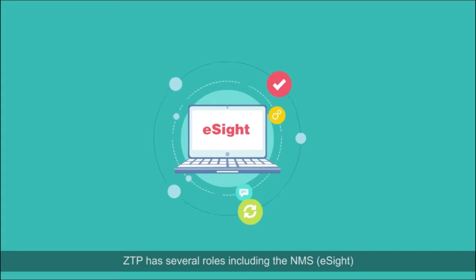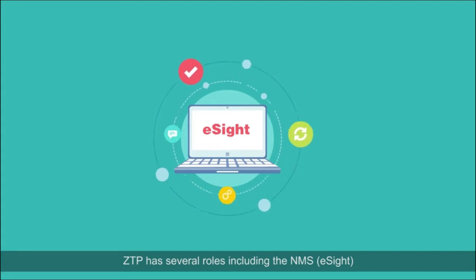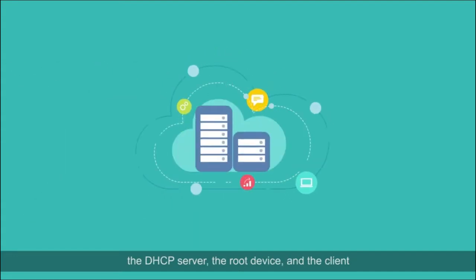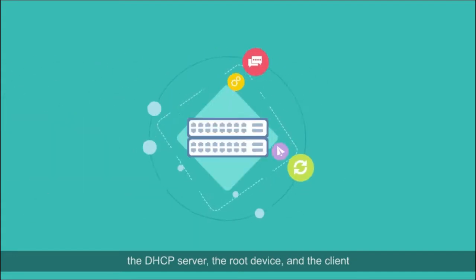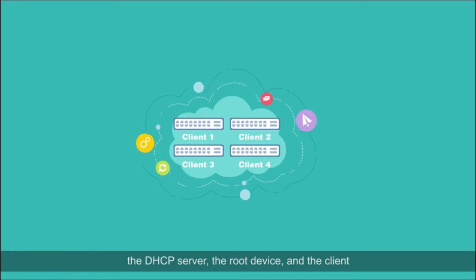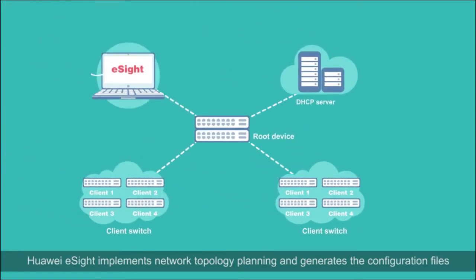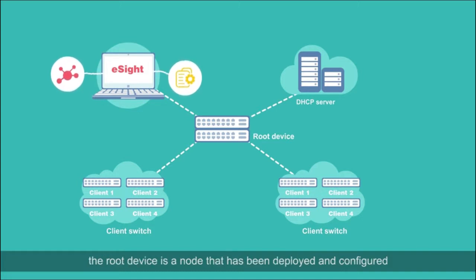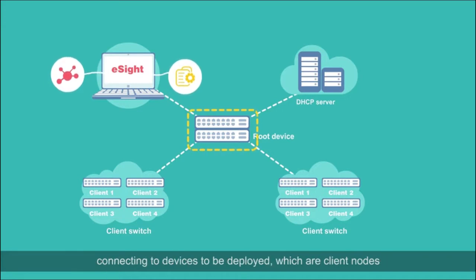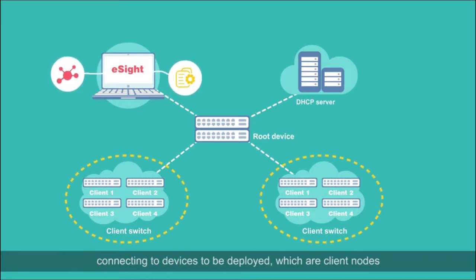ZTP has several roles including the NMS, eSight, the DHCP server, the root device, and the client. Huawei eSight implements network topology planning and generates the configuration files. The root device is a node that has been deployed and configured, connecting two devices to be deployed, which are client nodes.